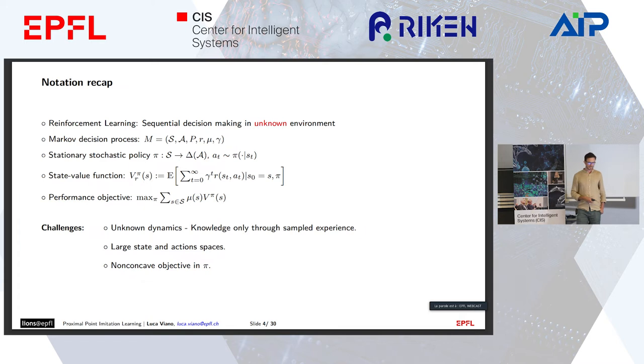The notation of this talk: we will use the Markov decision process formalism, a tuple of six elements: state space, action set, p that denotes the transition dynamics, a reward function r that's unknown in imitation learning, an initial distribution mu over the state set, and gamma, a discount factor between zero and one.